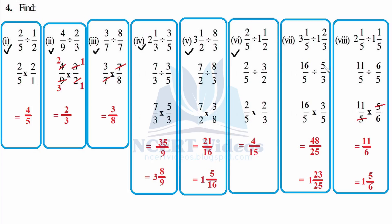Now: 3 and 1/5 — that is 15 plus 1 is 16 over 5, divided by 1 and 2/3 which is 5 over 3. Again you cannot cut here because it is division. Now 16 over 5 — flip it — 16 times 3 is 48 and 5 times 5 is 25 — improper. 25 once is 25, remainder 23, so it is 1 and 23 over 25.